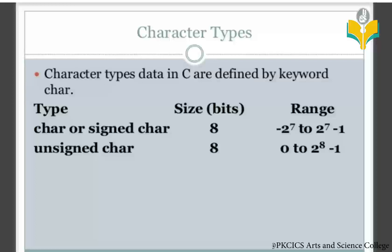Next, for primary data types — character types. We use the keyword 'char' to declare character variables. For example: char a = 'x'; — here 'a' is the variable name of character type storing the character 'x' in single quotes.